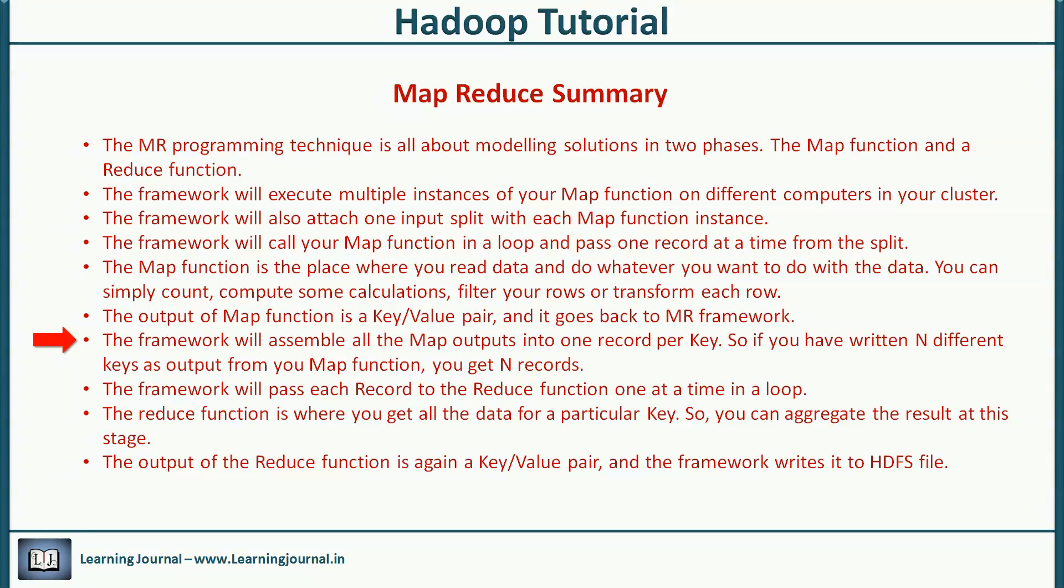The framework will assemble all the map outputs into one record per key. So if you've written three different keys as output from your map function, you get three records. The framework will pass each record to the reduce function one at a time in a loop. The reduce function is where you get all the data for a particular key, so you can aggregate the result at this stage. We'll see examples in the next video. The output of the reduce function is again a key-value pair and the framework writes it to an HDFS file.